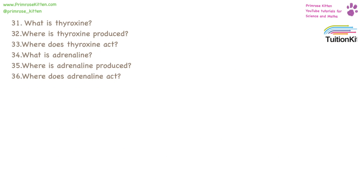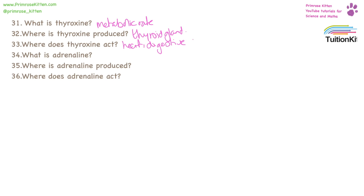Thyroxin is a very important hormone. It is very important for control of the metabolic rate. It is produced by the thyroid gland, and it acts on a large number of places including the heart, digestive system, the brain and muscles.